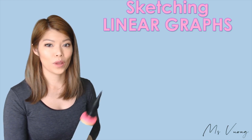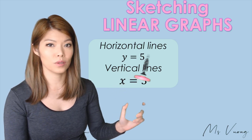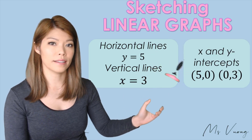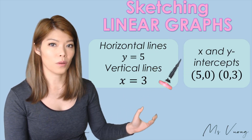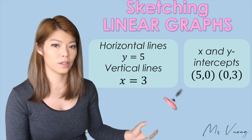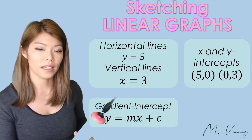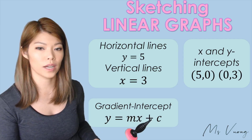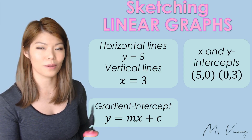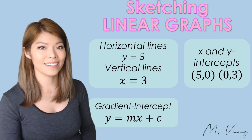There was quite a bit we went through, so let's recap quickly. We looked at horizontal lines where y equals a number, vertical lines where x equals a number, the x and y-intercept method where we find the y-intercept at x equals 0 and the x-intercept at y equals 0 and draw from those two coordinates, and lastly the gradient intercept method where we start at the y-intercept and move up or down then across using the gradient. You might want to watch this video again — there's a lot of content. Practice, practice, and I'll see you next time.